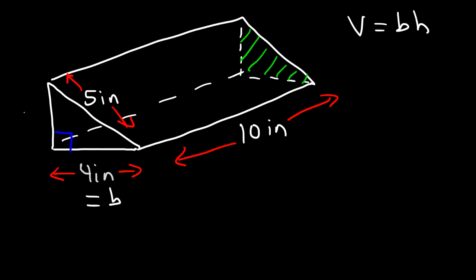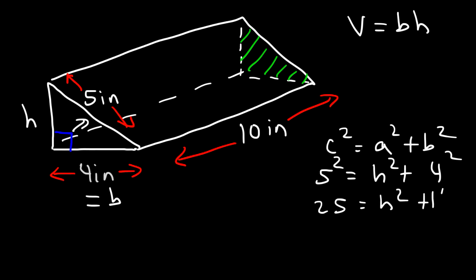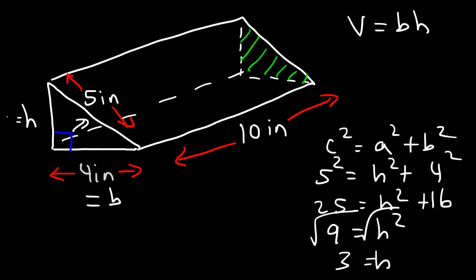So we've got to calculate the area of the right triangle. We have the base of the right triangle, but what we're missing is the height. So we need to use the Pythagorean theorem to calculate the height first. We know that c squared equals a squared plus b squared. c is the hypotenuse which is 5, a represents h in this example, and b is 4. So 5 squared is 25, 4 squared is 16, and 25 minus 16 is 9. Taking the square root of both sides, the square root of 9 is 3. So the height of the triangle is 3.